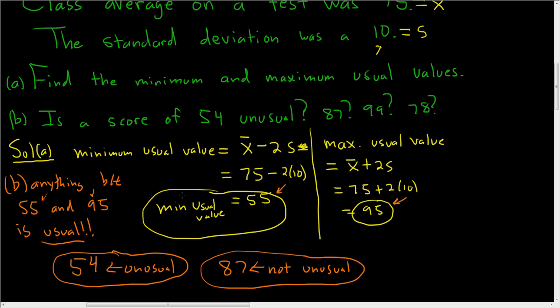What about 99? 99 is bigger than 95, it's not between these numbers, so 99 would be unusual.